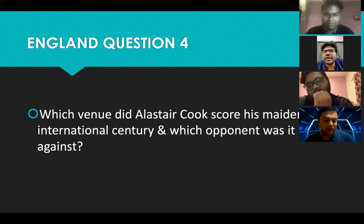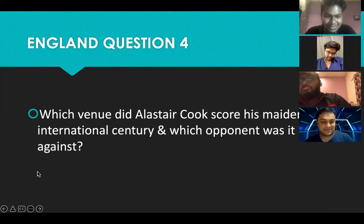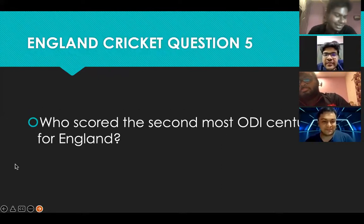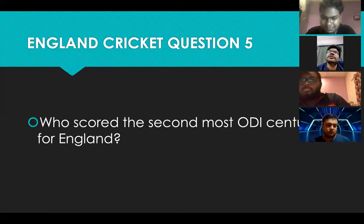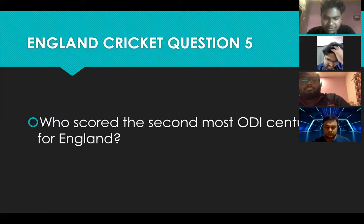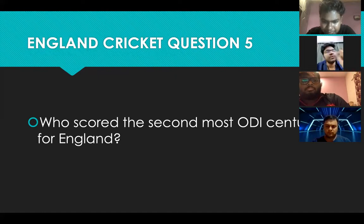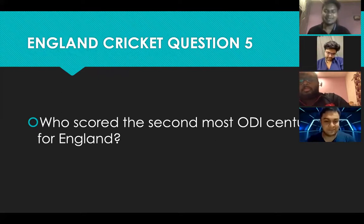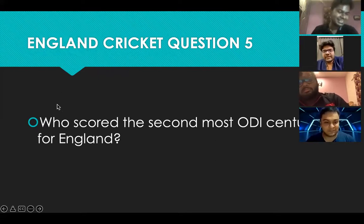Four correct in a row. Let's go to the last England question — who scored the second most ODI centuries for England? Second most. I think most is Joe Root, so you asked — Eoin Morgan! Correct! Brilliant — five in a row, Doctor. I just don't have words.